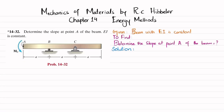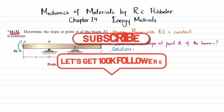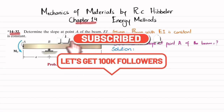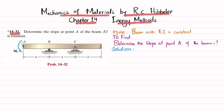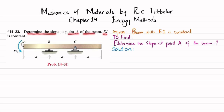Welcome back. In this video we are going to solve problem 14-32, taken from chapter 14 on energy methods. The book is Mechanics of Materials by R.C. Hibbeler. The problem statement is: determine the slope at point A of the beam, where EI is constant.